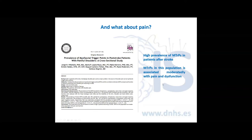Now we have been focusing on spasticity and function, but what about pain? Perhaps you treat many patients after stroke who complain about shoulder pain or upper limb pain. This study is interesting because it shows there is a high prevalence of trigger points in patients after stroke — the trigger points may be contributing to the patient's pain. In this population, trigger points were associated with pain and dysfunction. So whenever you have a patient with pain, I think you should explore for trigger points, because they can be a source of both pain and dysfunction.